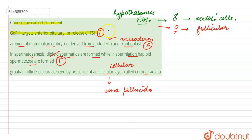So the only true option here is option number 1 — that GnRH targets the anterior pituitary for the release of FSH. So this is all about this query. Thank you.